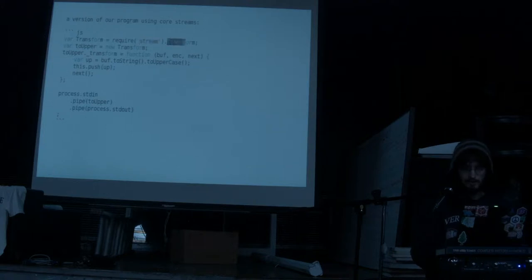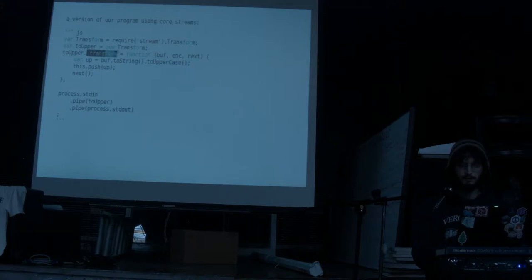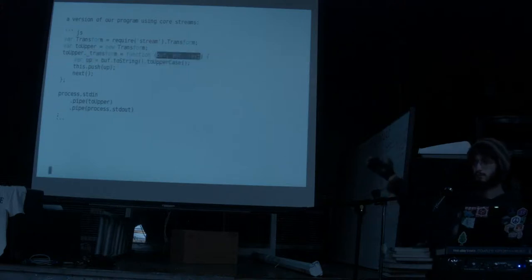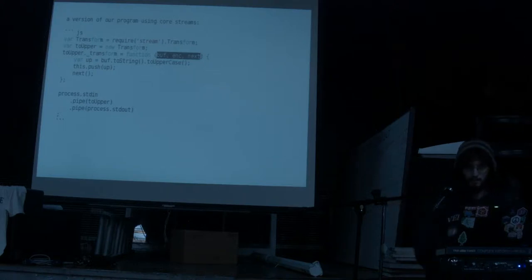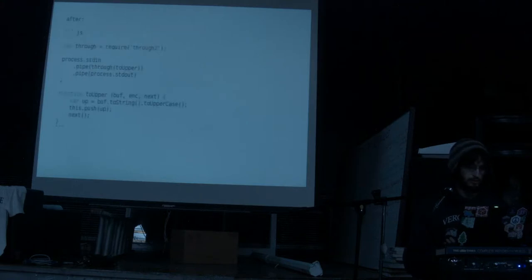Here's what it looks like using Core Streams. The stream module in Node is built-in and has this uppercase-T Transform, which is a constructor function. You can instantiate a new transform stream, but then you have to define an underscore _transform function, and you get a similar signature to through: buffer, encoding, and a next function.